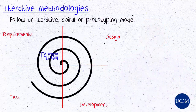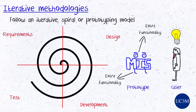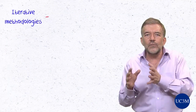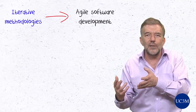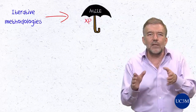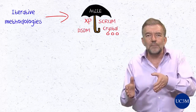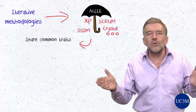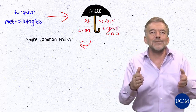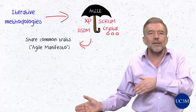For example, when the prototype is shown to the users, they might find it easier to identify the extra functionality they would like. In recent years, iterative methodologies have evolved into the so-called agile software development. This is an umbrella name encompassing many different development methods, such as Scrum or Extreme Programming. However, they all share common traits that have been summarized in the Agile Manifesto, described in the supporting documentation accompanying these videos.